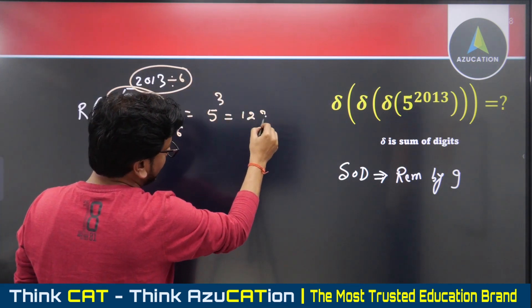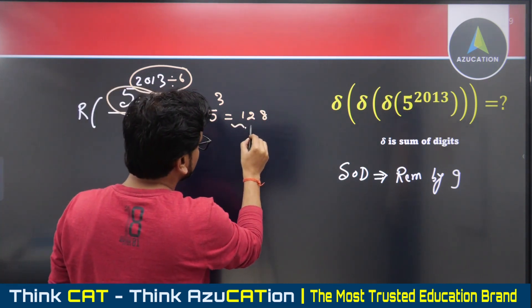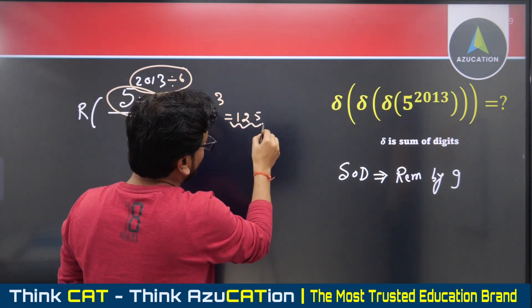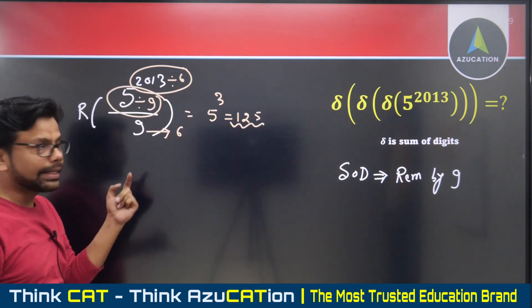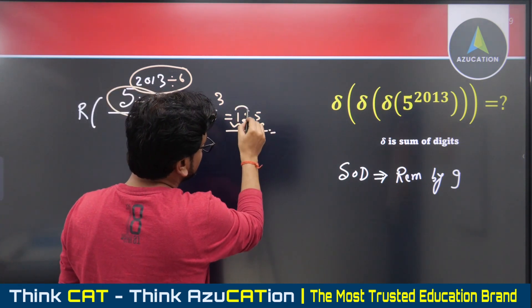That gives us 5 to the power 3, which is 125, not 128. Since 125 is more than nine, what do we need to do? We need to divide it by nine. And what does dividing by nine mean? Sum of digits.